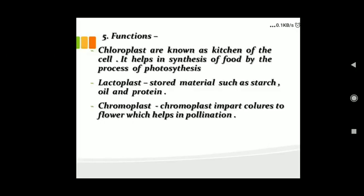Chloroplasts can be green, red, yellow, or brown depending upon the types of pigment. Chloroplast is known as the kitchen of the cell — it helps in synthesis of food by the process of photosynthesis. Leucoplast stores material such as starch, oil, and protein.